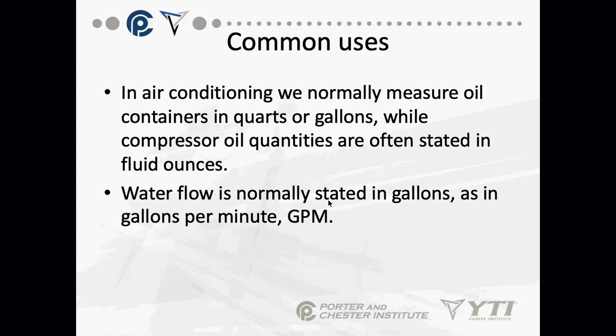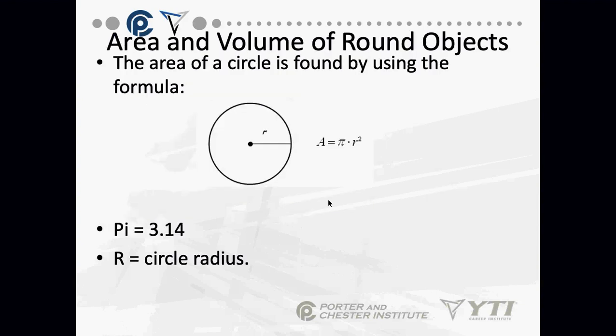Water flow, like for piping in heating or large air conditioning systems, has to handle the gallons per minute required to cool the space. Ductwork uses cubic feet per minute, while piping for larger systems moves water measured in gallons per minute.